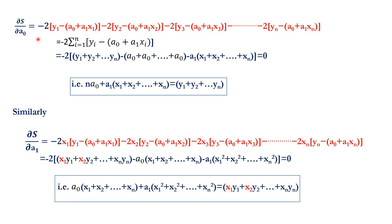So, dS/da₀ is obtained by differentiating each term with respect to a₀. For the first term, this will be minus 2 times [y₁ - (a₀ + a₁x₁)], and like that. Combining all the terms using the summation, we can write in this form, and using the expanded format, this can be written as this one. So, removing this minus 2 and taking this term into the other side of the equation, we can write n·a₀ plus a₁(x₁ + x₂ + ... + xₙ) equal to y₁ + y₂ + ... + yₙ.